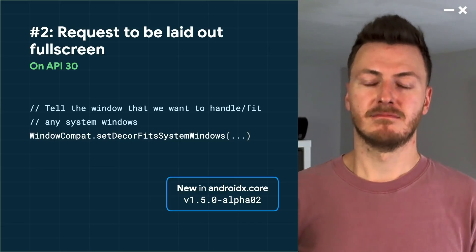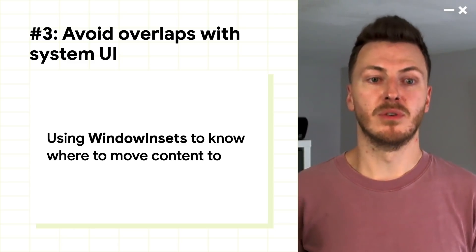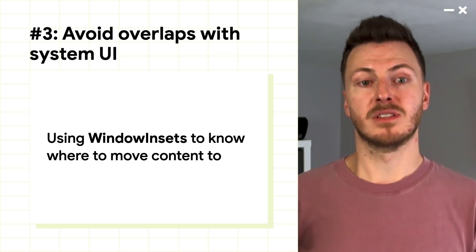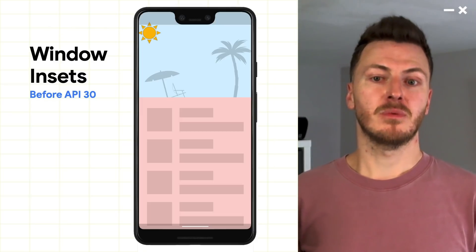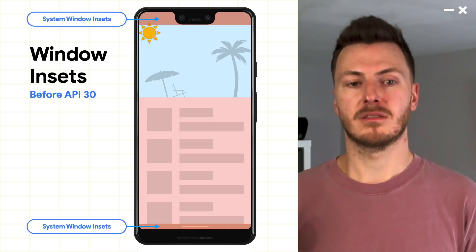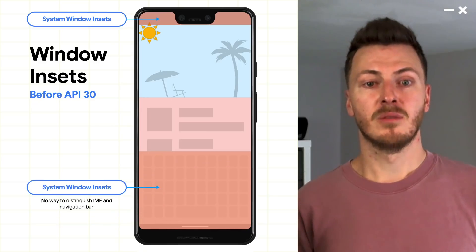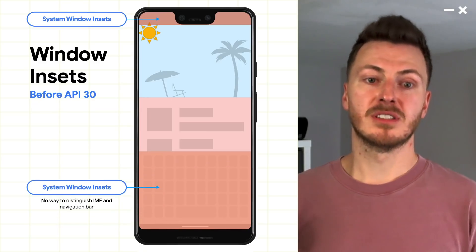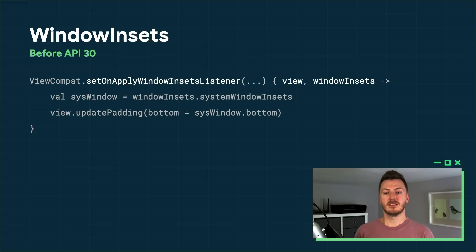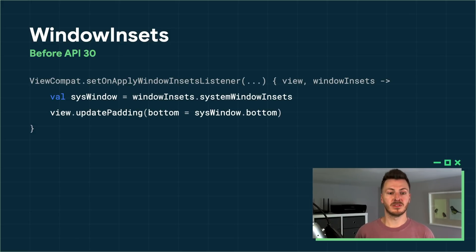That's the second step updated. Now let's look at the third step: avoiding overlap with system UI. That can be summarized as using window insets to know where to move content to avoid conflicts with the system UI. Looking at the window insets API before API 30, the most common inset type to use was the system window insets. These cover the status and navigation bars, but also the keyboard when it's open. Previously, though, there wasn't a way to distinguish between the IME and the navigation bar — you'd just get one value. To use window insets, you'd typically add an onApplyWindowInsetsListener to a view, then handle insets passed to it. Here we're fetching the system window insets and updating the view's padding to match, which is a very common use case.